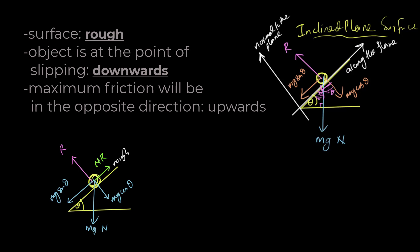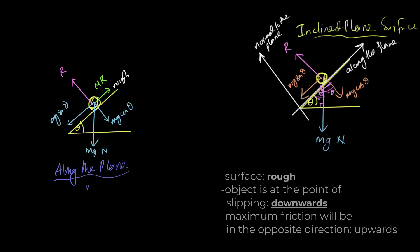The normal to the plane component R and mg cos theta are going to be in equilibrium because they are canceling each other out. Here, in limiting equilibrium, friction is going to work, so this is going to be mg sine theta and mu R. Taking components along the plane: mg sine theta equals mu R.